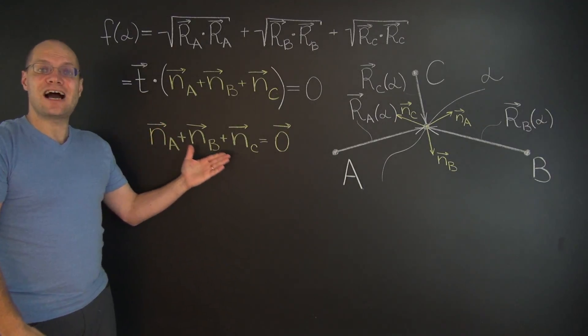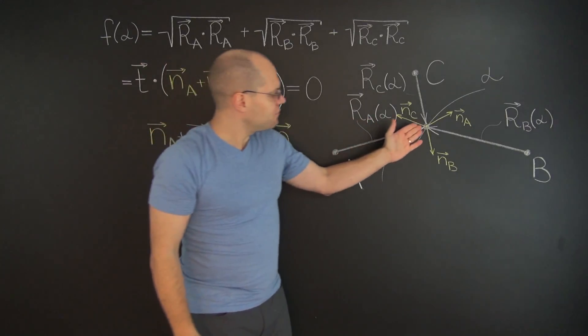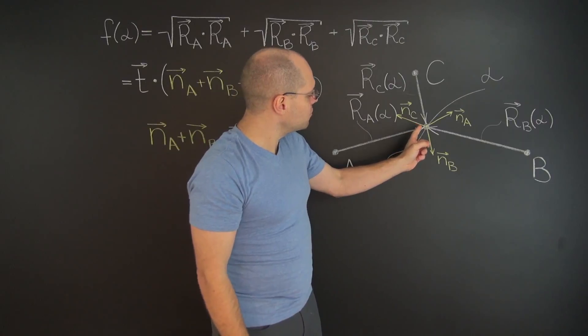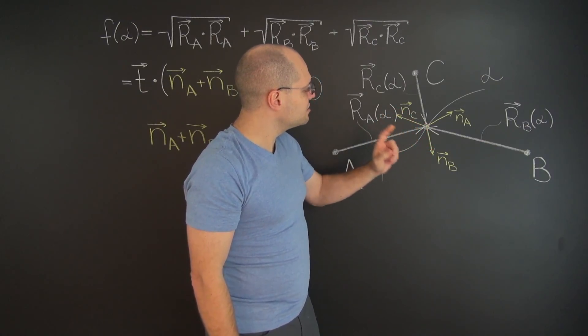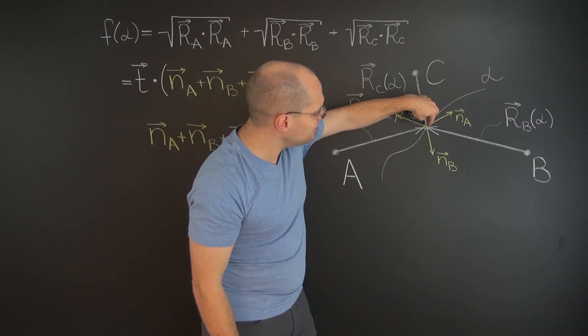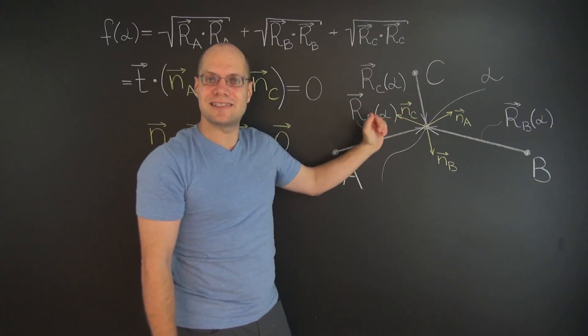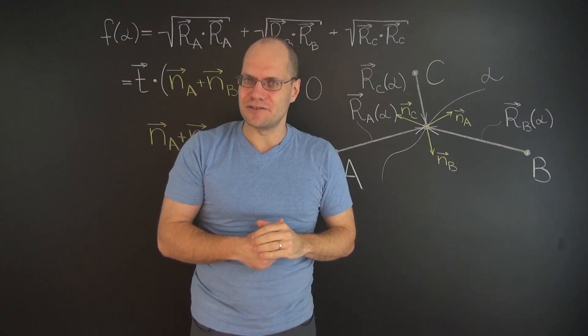So that's our final analytical conclusion. The sum of the three unit vectors must equal zero. So in other words, this point needs to be positioned in such a way that the resulting unit vectors that point in the directions of these segments add up to zero. That's the analytical conclusion.